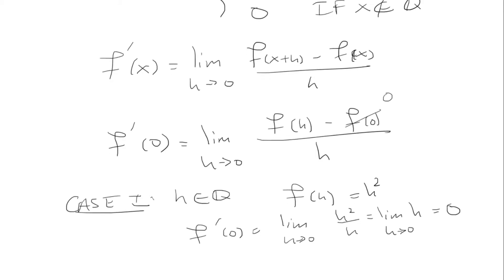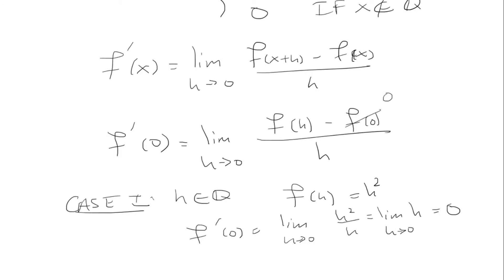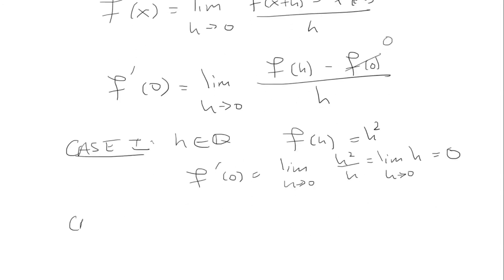Now, if we consider the second case where h is irrational, we know that f of h is going to be 0. So it's always going to be 0 if it's irrational. So anything we plug in will get 0.